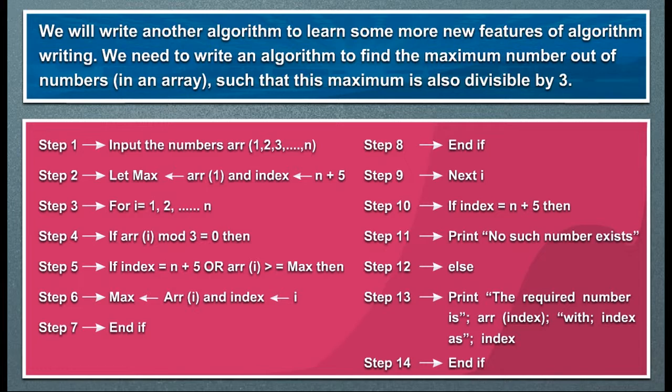Step 3: For i = 1,2,...,n. Step 4: If arr(i) mod 3 = 0 then Step 5: If index = n+5 OR arr(i) >= Max then Step 6: Max ← arr(i).